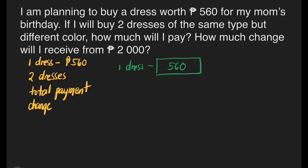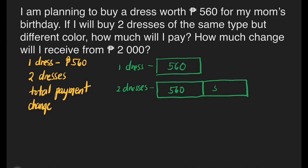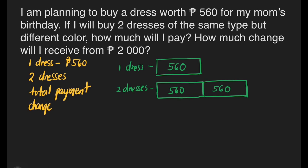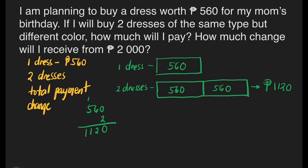We'll use the block model approach. One dress costs 560 pesos — one box with 560 inside. If I will buy 2 dresses, we will have 2 boxes with 560 pesos in each. By multiplying 560 pesos by 2: 0 times 2 is 0; 6 times 2 is 12 — write 2, carry 1; 5 times 2 is 10, plus 1 is 11. So 2 dresses cost 1,120 pesos.